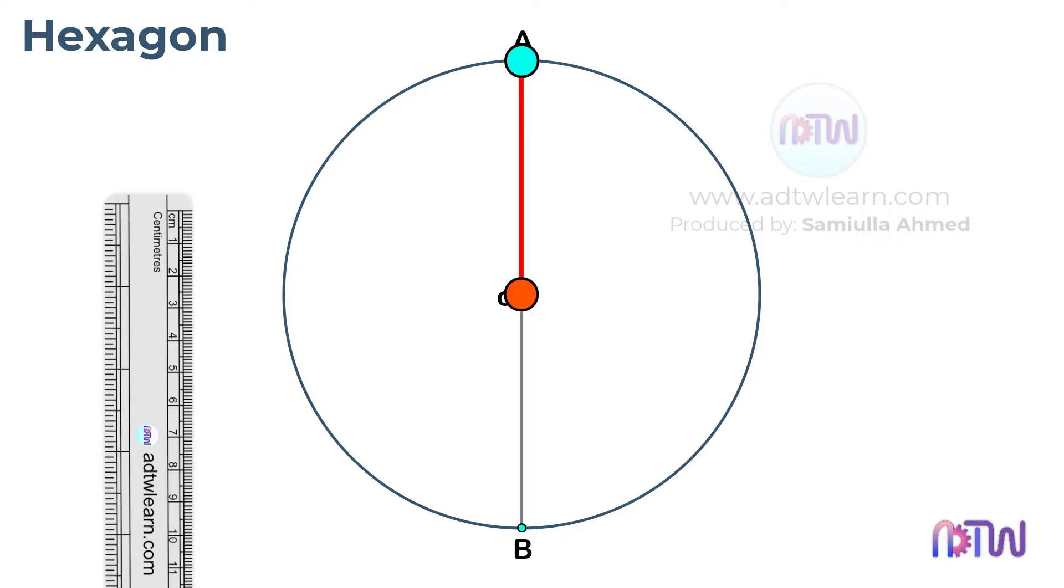The distance between point O and A is the radius of this circle. After this, adjust the length of the compass to the radius of this circle and draw an arc touching the circumference of this circle as shown.